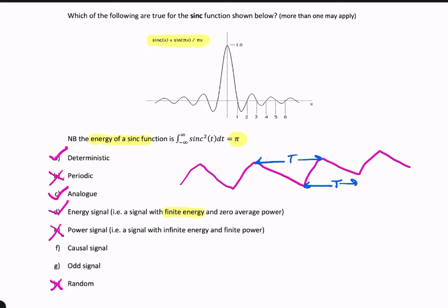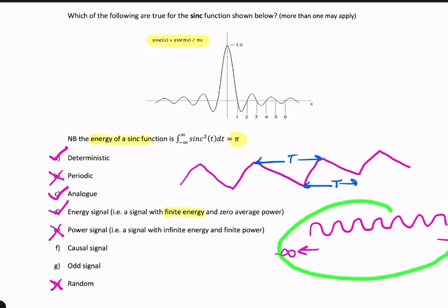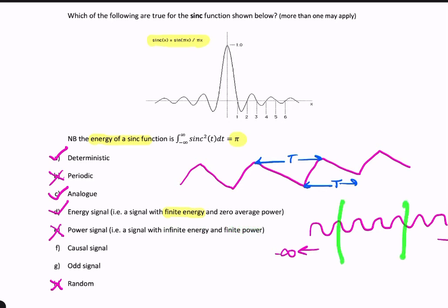A power signal is a signal that has infinite energy but a finite amount of power — something like a sine wave. A sine wave continues towards infinity in time and starts from t equals minus infinity, so the overall energy is infinite. But the power isn't infinite — it's finite, because you would be integrating over a limited amount of time, dividing by that time, and that gives you a finite number.